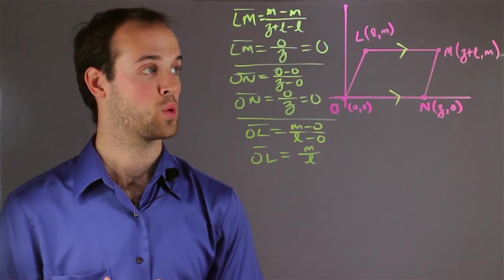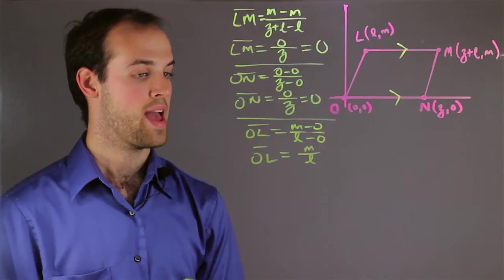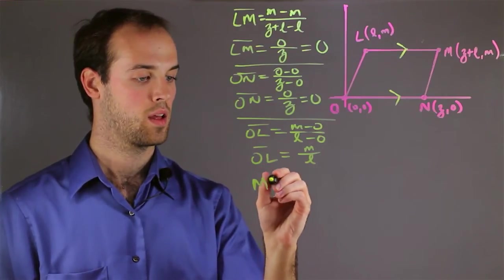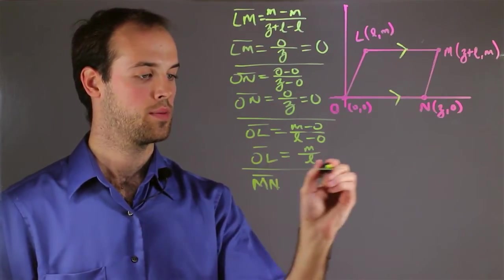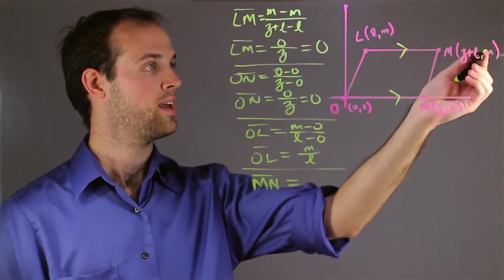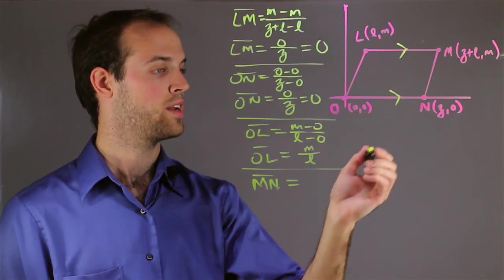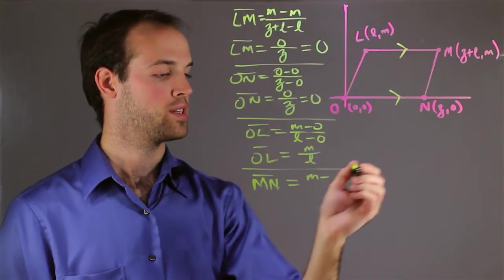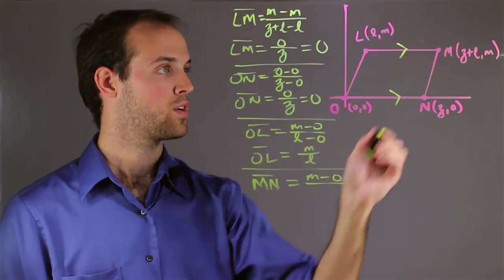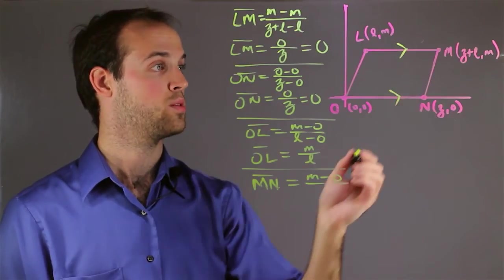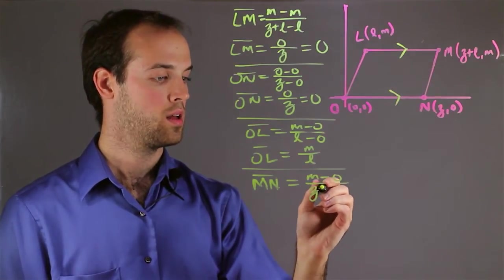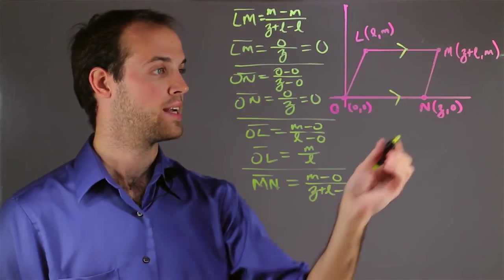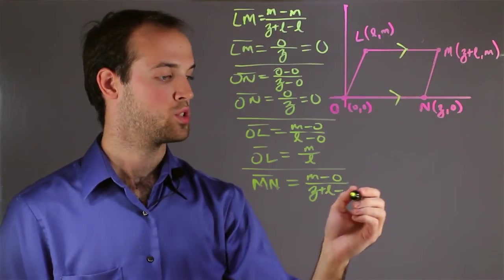So let's keep that in mind and move on to our next line, which is MN. And again, we want to take the second y-coordinate, M, minus the first y-coordinate, zero, over the second x-coordinate, which is Z plus L, minus the first x-coordinate, which is Z.